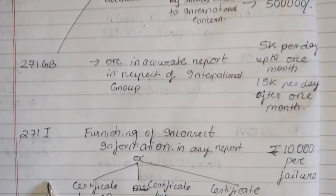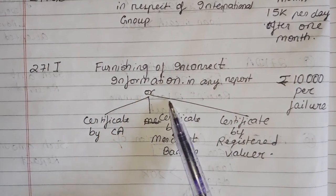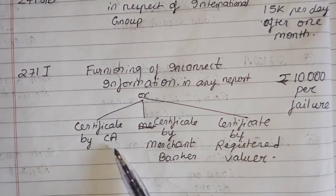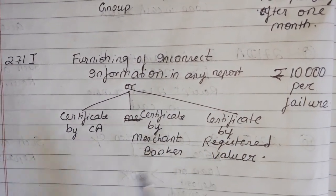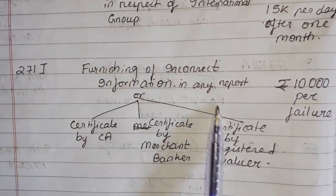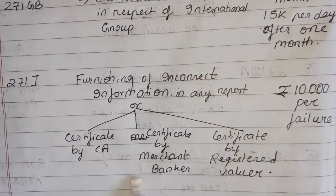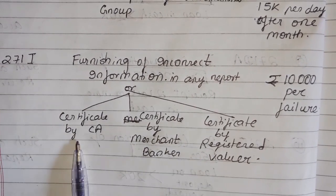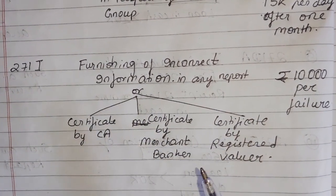Section 271G specifically covers furnishing incorrect information in any report and certificates — by a CA, by a Merchant Banker, or by a Registered Valuer. If any certifying authority provides incorrect information in a certificate, the penalty is ₹10,000 per failure. Section 271J is the section for this — if any of those three types of certificates contain incorrect information, ₹10,000 per failure.